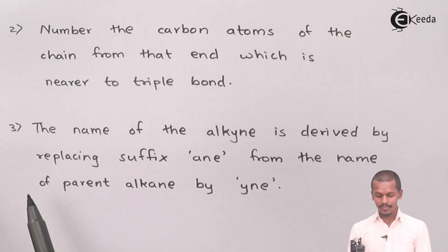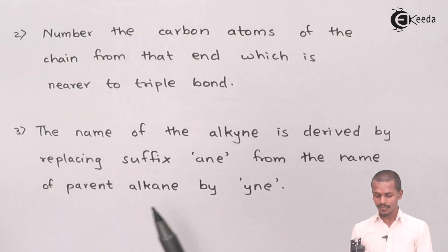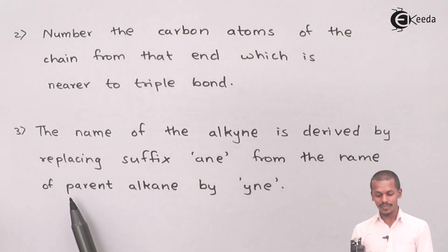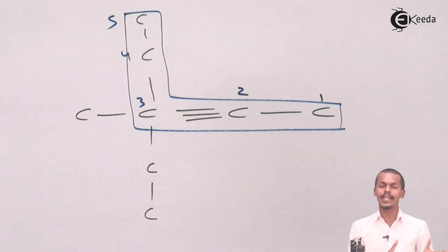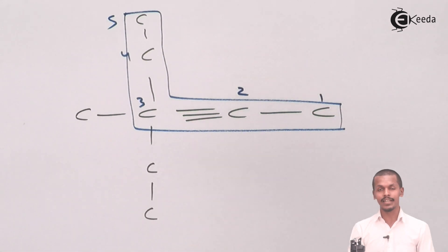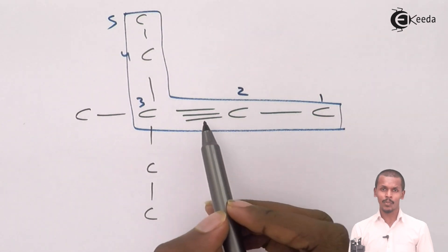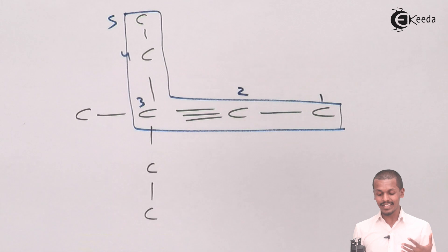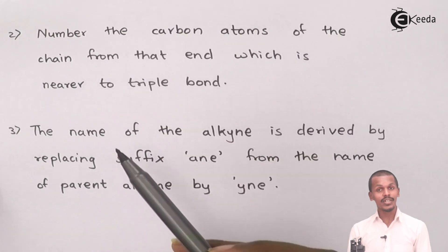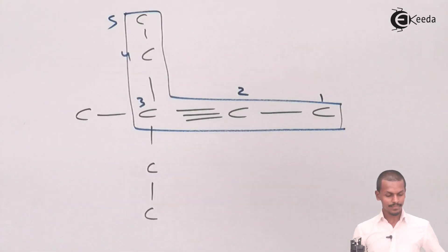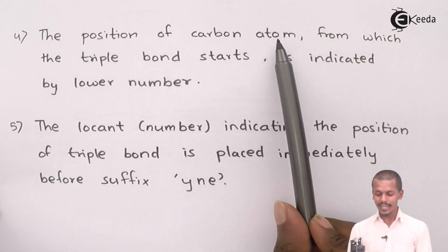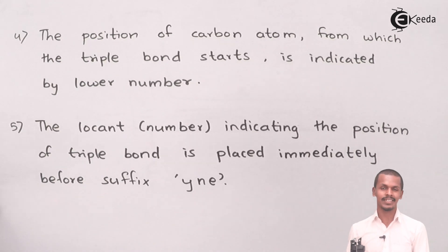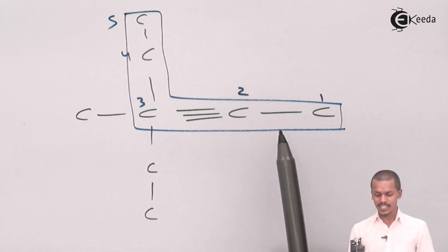The third rule is that the name of the alkyne is derived from the parent alkane by replacing the suffix '-ane' with '-yne'. So if the longest chain has 5 carbon atoms, the parent alkane would be pentane, but we replace '-ane' with '-yne' to get pentyne, because the carbon-carbon triple bond makes it an alkyne. The fourth rule states that the position of the carbon atom from which the triple bond starts is indicated by the lower number.